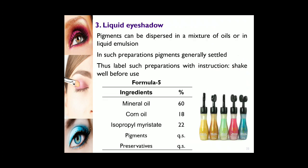Next is liquid eye shadow. These are liquid in nature, with a lower concentration of waxy materials compared to previous formulations. The pigments can be dispersed in a mixture of oils or in liquid emulsions, but the pigments generally settle out. Therefore, the preparation must be stirred before use, and the label should carry the instruction 'shake well before use.' The formula contains mineral oil 60%, corn oil 18%, propyl myristate 22%, along with pigments and preservatives.